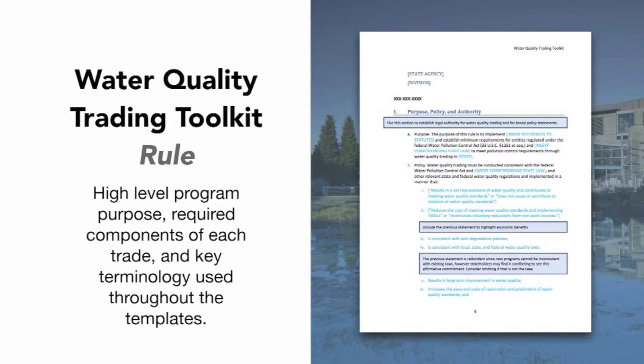The state rule provides the high-level program purpose, required components for each trade, and key terminology that's used throughout the templates and throughout the multiple levels of state policy. Because the templates are meant to work together, it can be helpful to first review the rule, which lays the foundation for program structure and terminology throughout. State guidance is designed to set policy sideboards for all trades statewide.